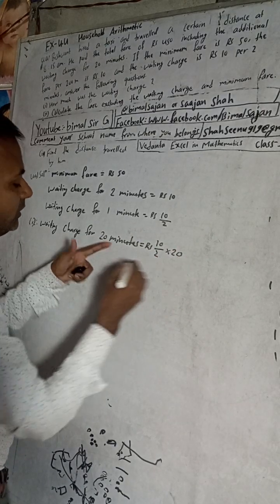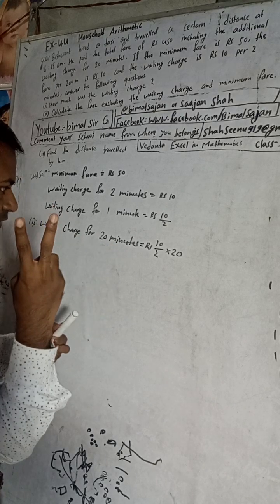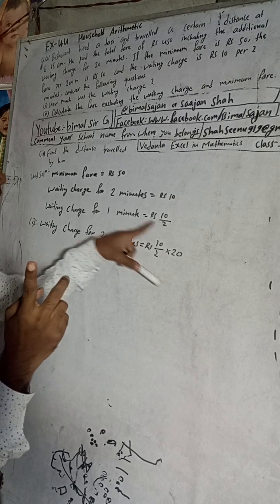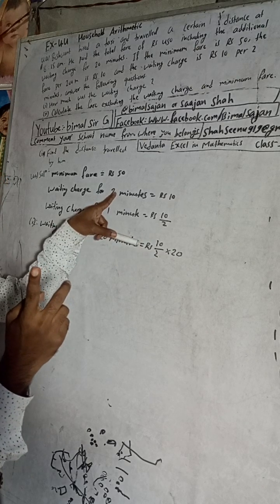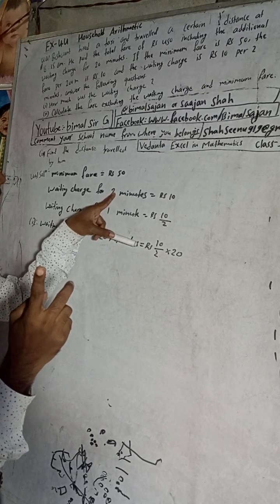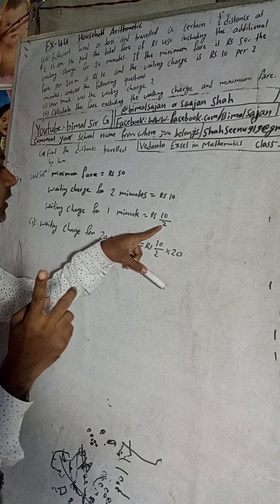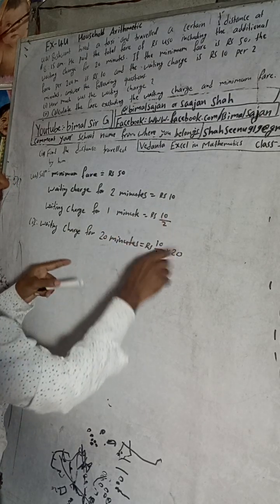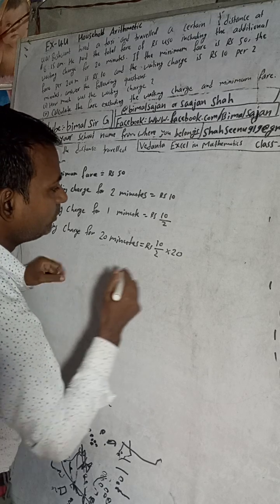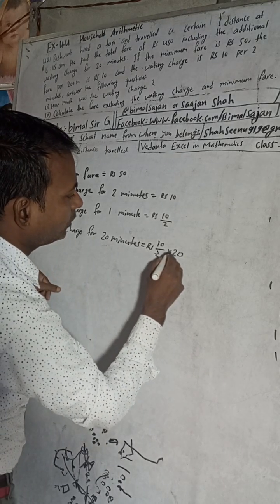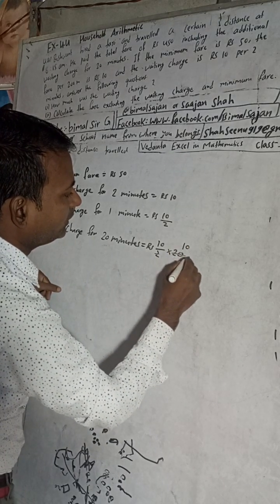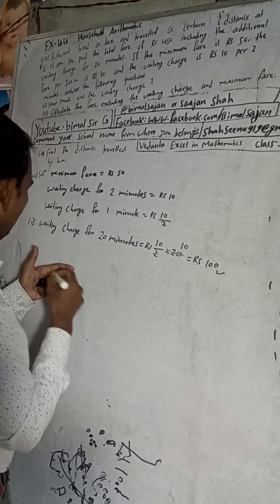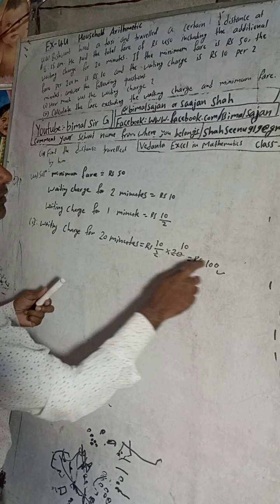In the unitary method, there are only two things to do: divide and multiply. When the quantity decreases — from 2 minutes down to 1 minute — we divide. Then when it increases from 1 minute to 20 minutes, we multiply. So this will be 10 divided by 2, multiplied by 20, which equals Rs 100. So the waiting charge for 20 minutes is equal to Rs 100.